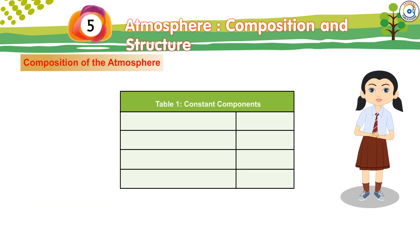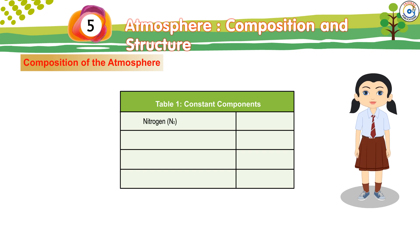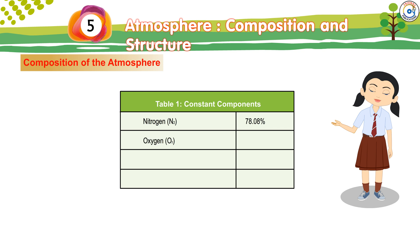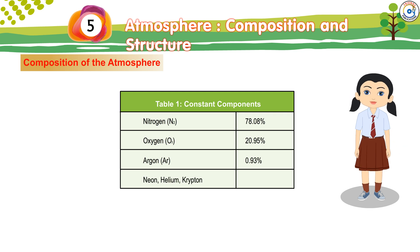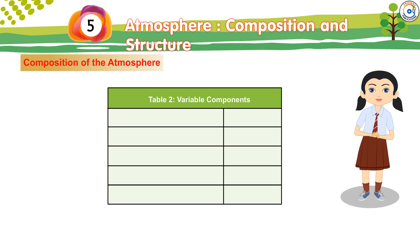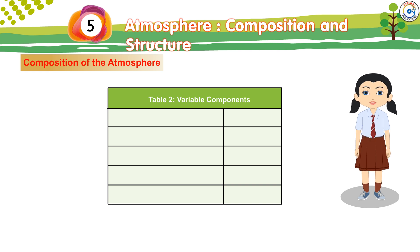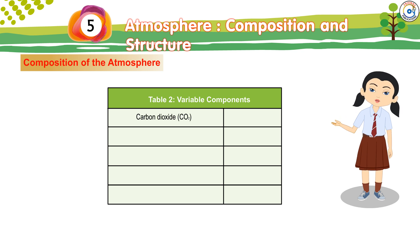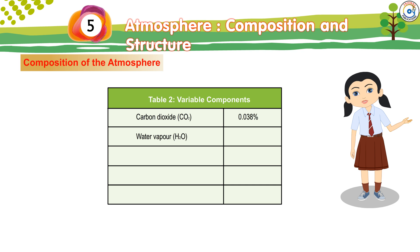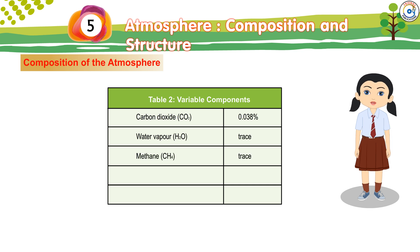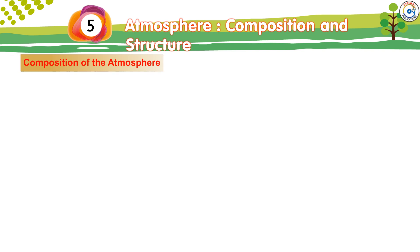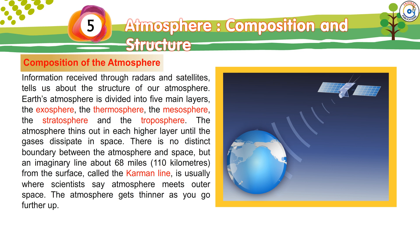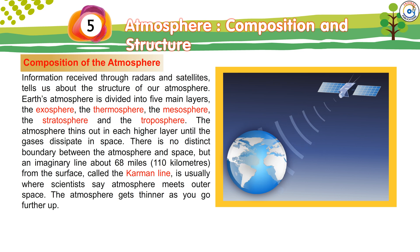Here are the composition tables. Table 1 shows constant components: Nitrogen (N2) at 78.08%, Oxygen (O2) at 20.95%, Argon (Ar) at 0.93%, and Neon, Helium, and Krypton together at about 0.0001%. Table 2 shows variable components: Carbon dioxide (CO2) at 0.038%, Water vapor (H2O) — trace, Methane — trace, Sulfur dioxide (SO2) — trace, and Ozone (O3) — trace. Information received through radars and satellites tells us about the structure of our atmosphere.